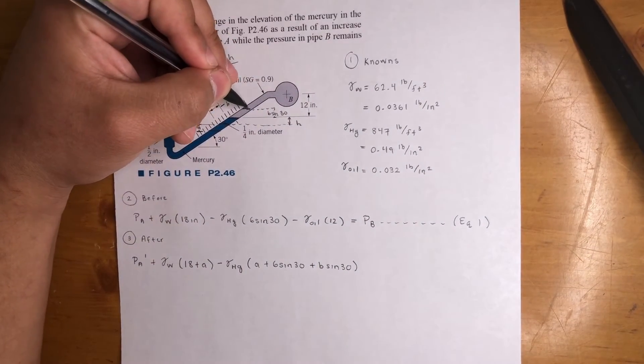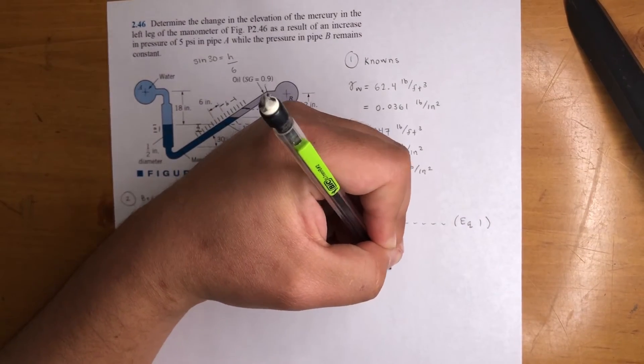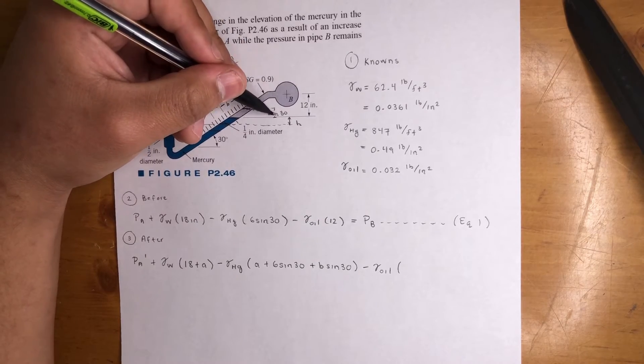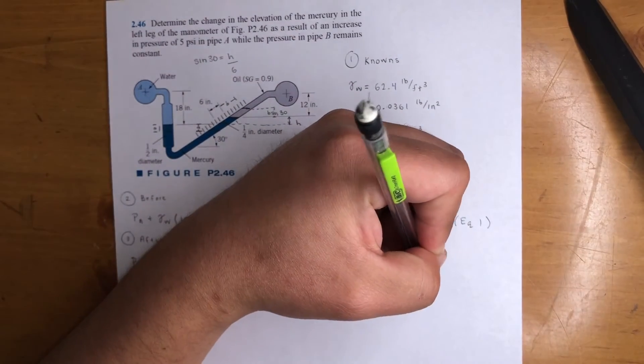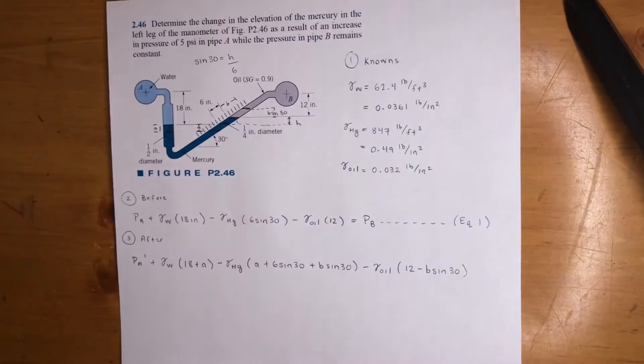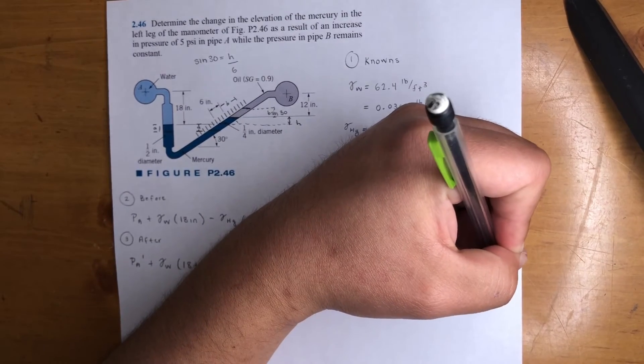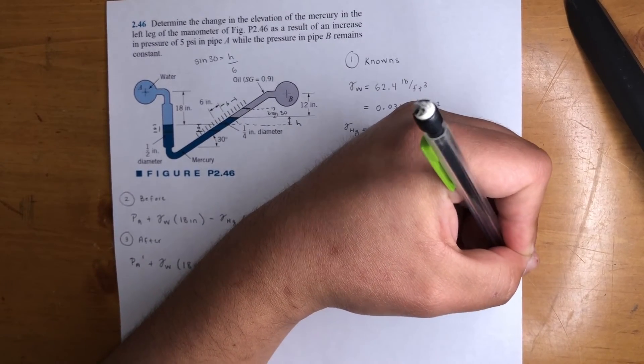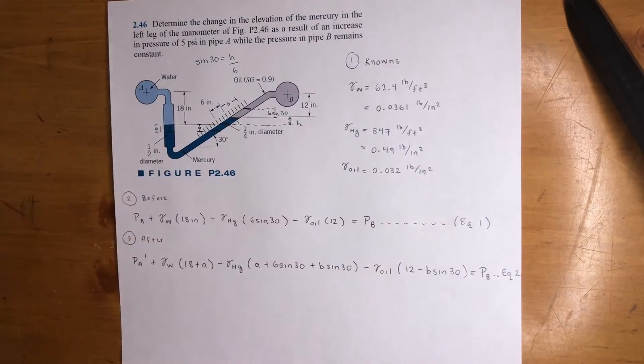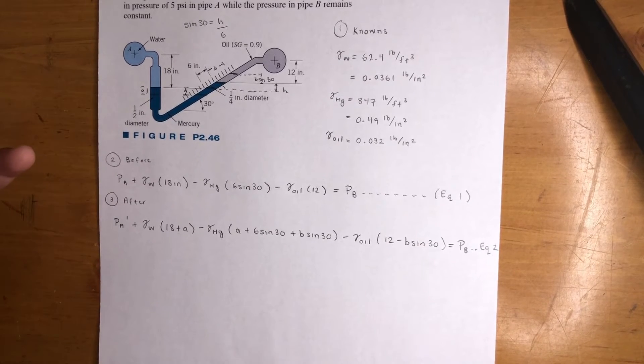Now we're going up A, 6 sine 30, and then B sine 30. Since this distance right here is B, this is going to be B sine 30. That distance is going to be A plus 6 sine 30 plus B sine 30. Now, we're going up. It's oil, and that distance is 12 minus B sine 30. And that is equal to PB. This is equation 2.